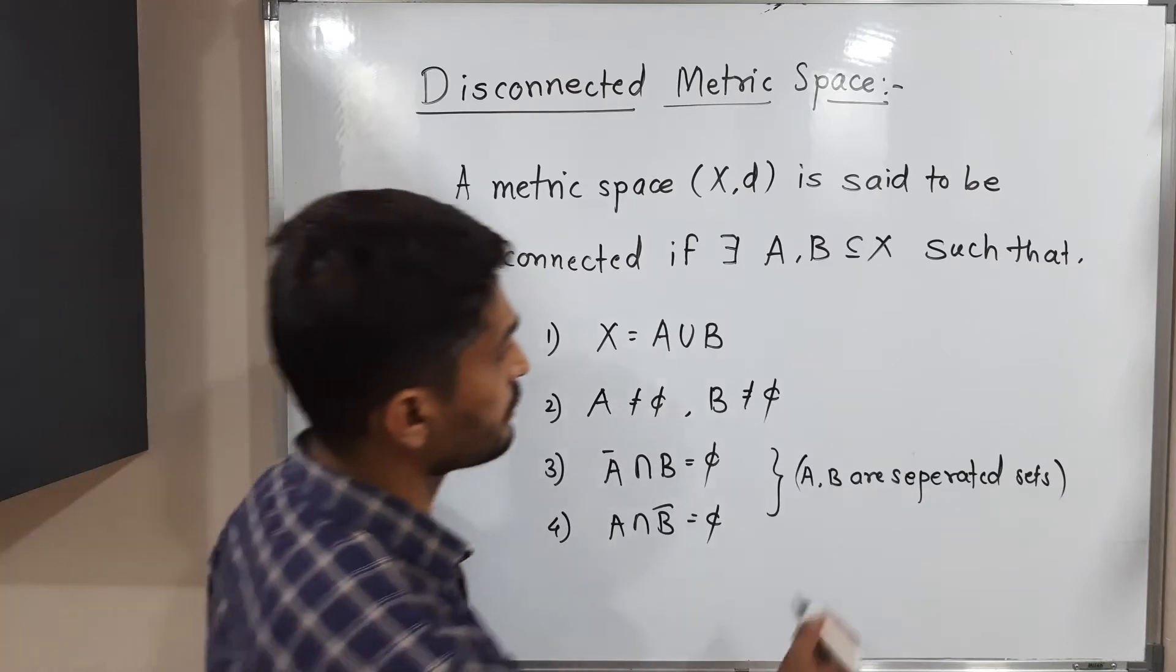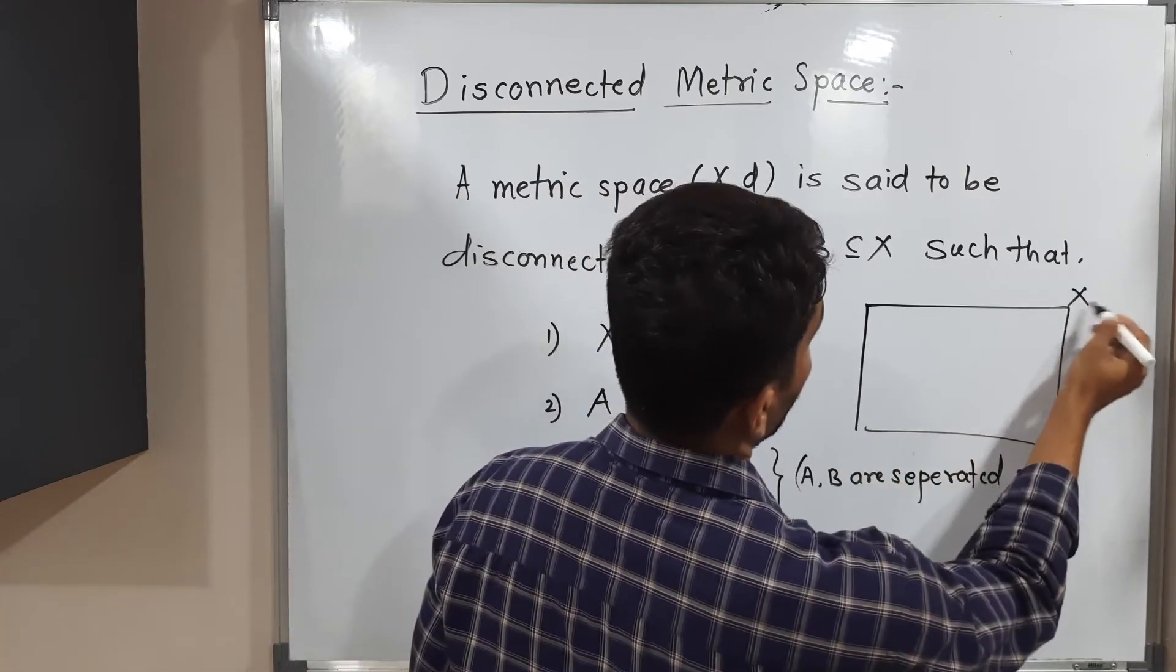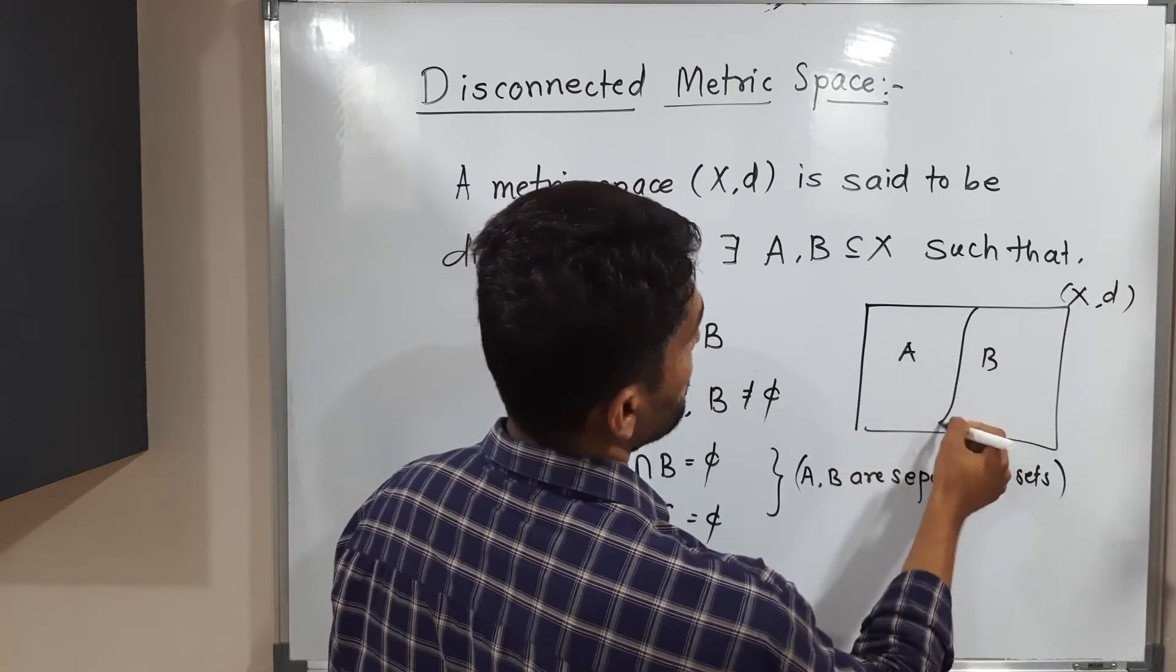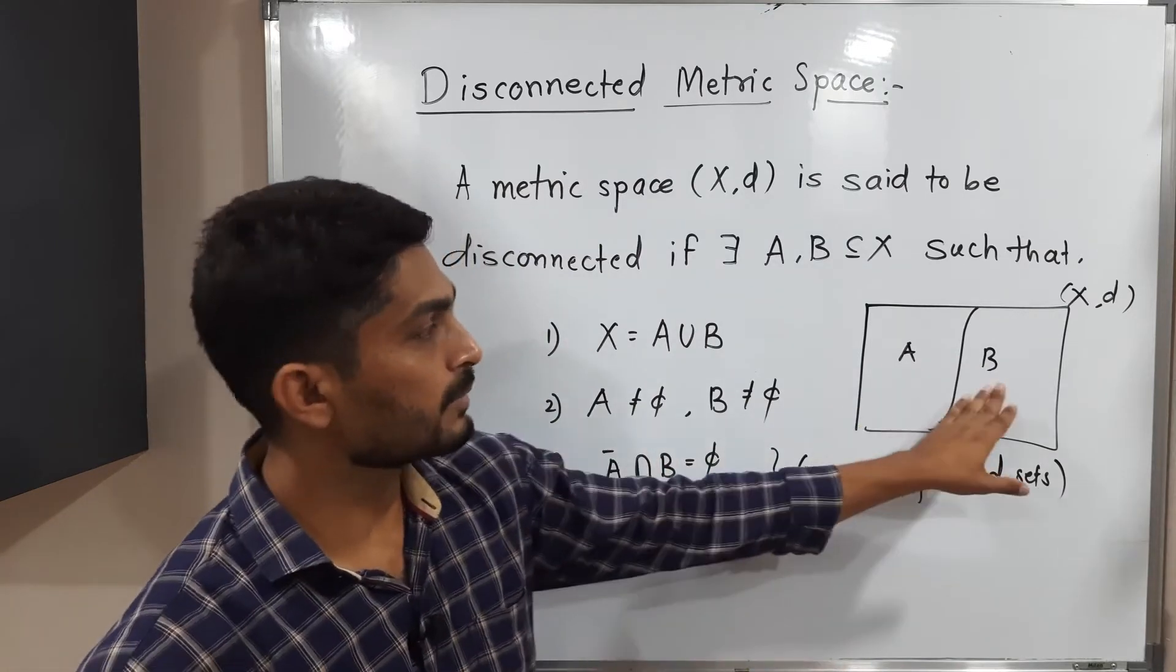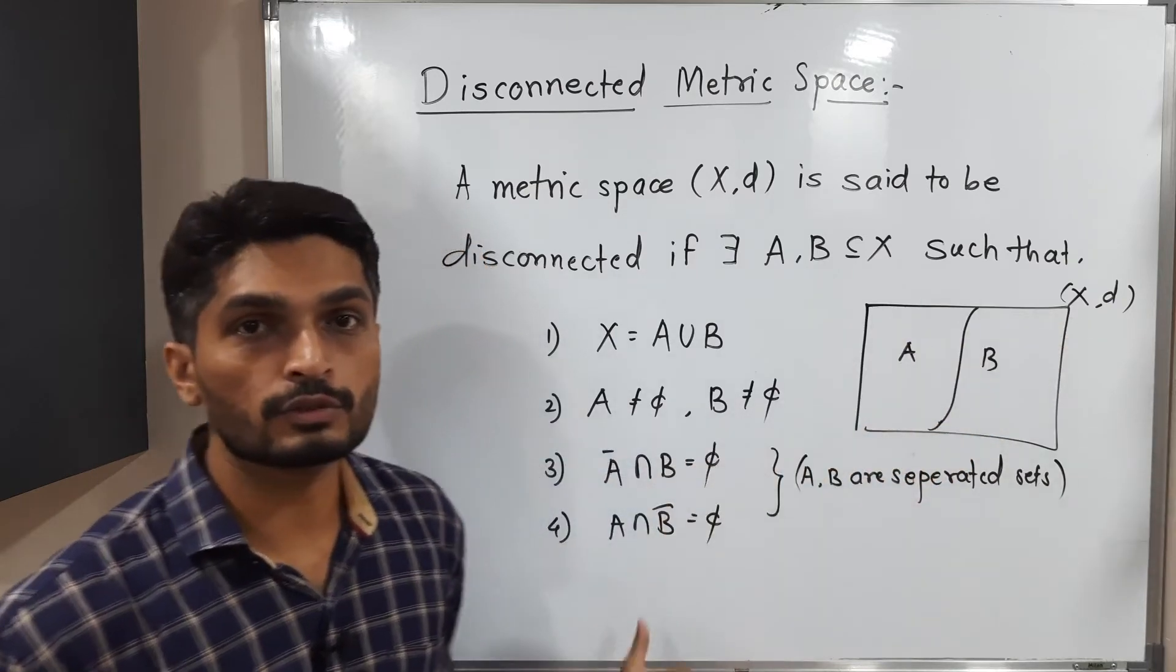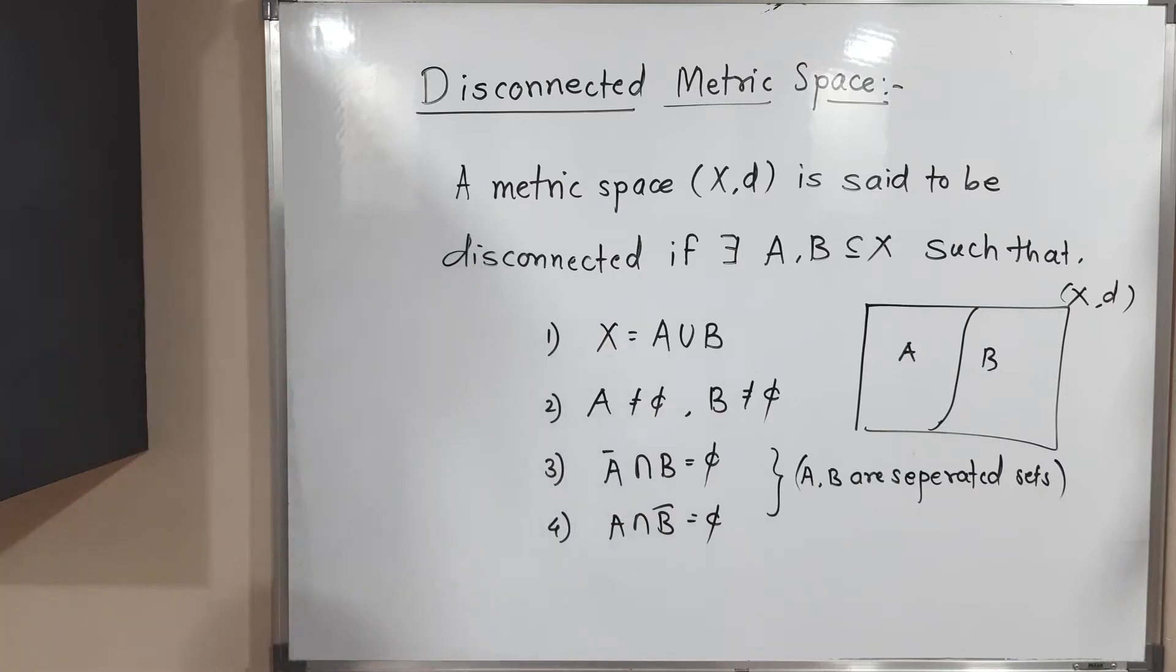Let us draw the diagram so you can easily understand. Suppose this is a metric space X,d. If it is possible to find sets A and B, subsets of X, such that both of them should be non-empty, their union should be X, and these two sets should be separated, then we can say metric X is disconnected metric space.